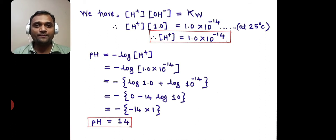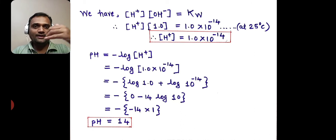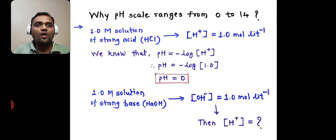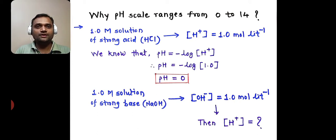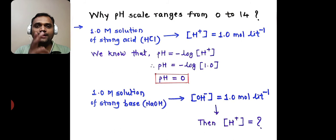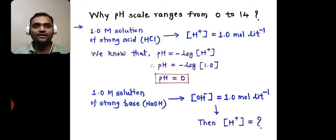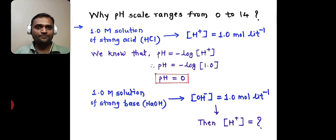So this is the other extreme. At one extreme, we have the minimum range of pH = 0, and at the other extreme, the maximum range is pH = 14 — giving the range 0 to 14. This is the proof of why the pH scale ranges from 0 to 14. In many examinations, this question is asked and students know the range is 0 to 14 but cannot explain why. We explain it using these two examples: a 1 molar solution of strong acid HCl and a 1 molar solution of strong base NaOH.